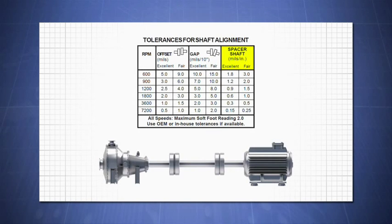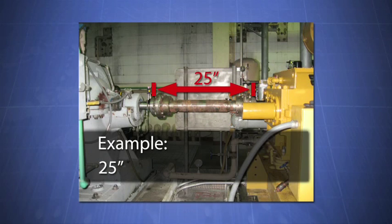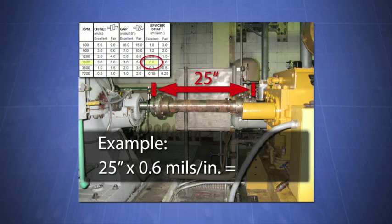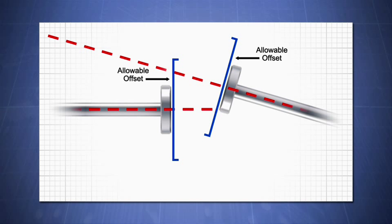In the Ludeca tolerance table for spacer shafts, you have two columns, Excellent and Fair. Take the length of the spacer shaft and multiply it by this number. That gives you the allowable offset. Remember that a longer spacer shaft gives you more allowable offset.